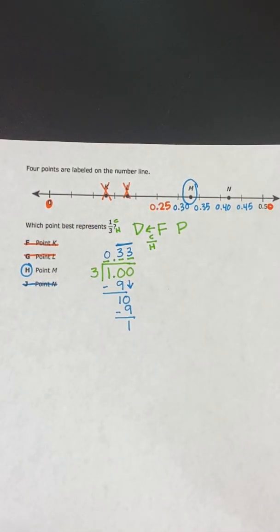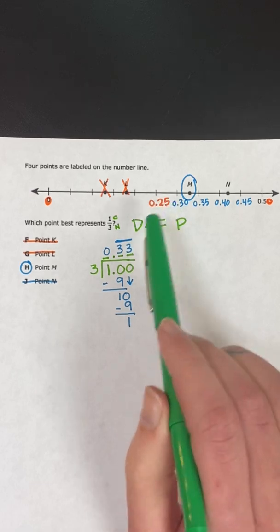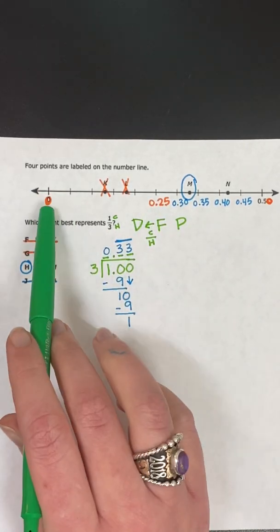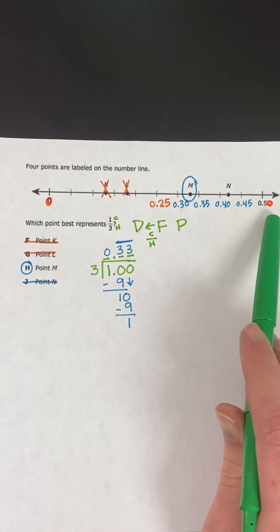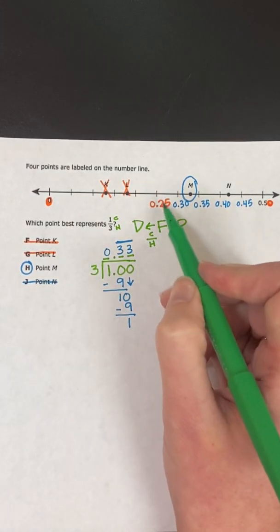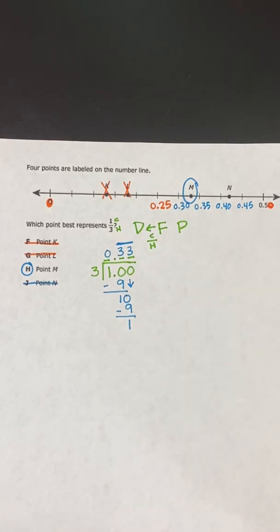So make sure if we have a fraction, fractions don't go on number lines. Decimals do. And you have to pay attention to what your endpoints are. This one was zero and fifty. So think of money. Find your center point and then see what it's counting by.